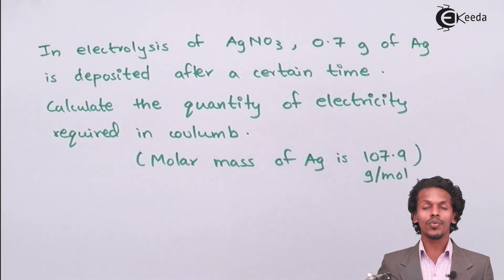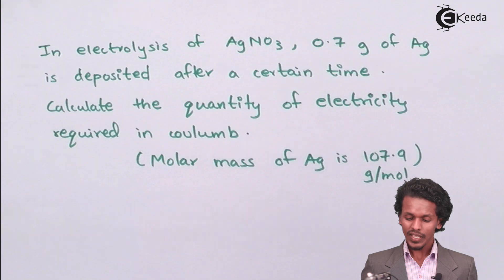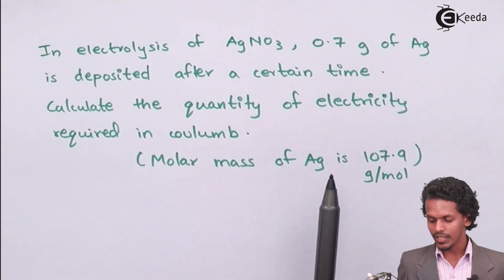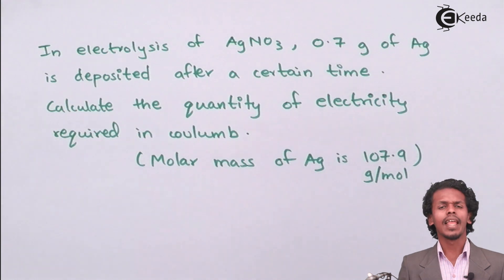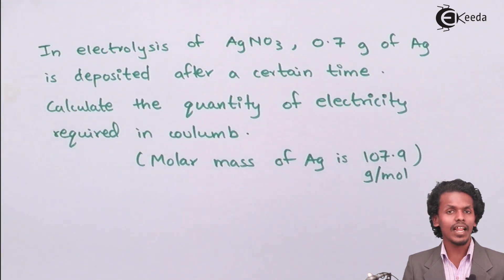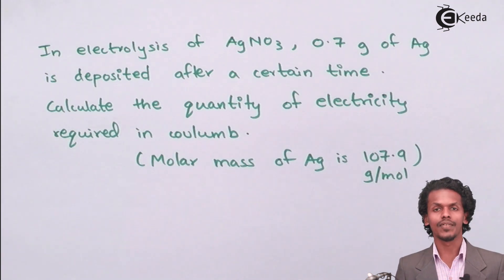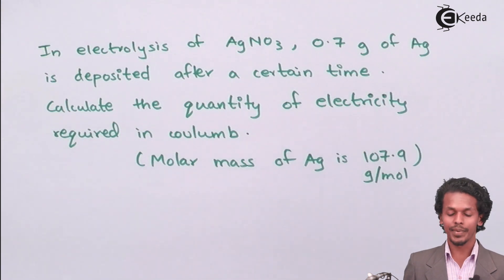But for that we should know the value of z also. In this case the value of z will be 1 because Ag has been involved. Let us discuss in detail how we can estimate the required value.